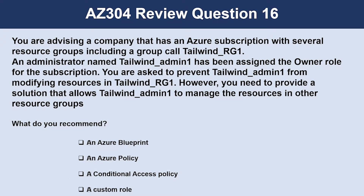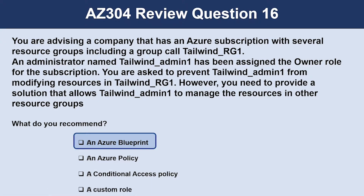Question number 16. You are advising a company that has an Azure subscription with several resource groups including a group called Tailwind Resource Group 1, or RG1. An administrator named Tailwind Admin 1 has been assigned to the owner role for the subscription, and you are asked to prevent Tailwind Admin 1 from modifying resources in Resource Group 1. However, you need to provide a solution that allows Admin 1 to manage resources in other resource groups. The correct answer is an Azure Blueprint. An Azure Blueprint allows architects to create artifacts and definitions that can include deny permissions in deployments. This is something that ARM templates also cannot solve alone. Azure policies can be part of a blueprint but will not on their own provide deny permissions in this context.